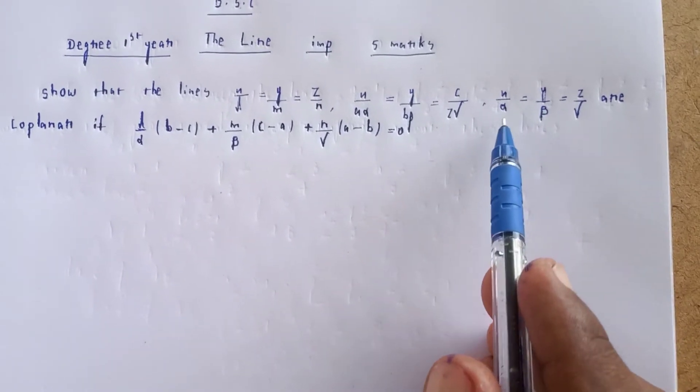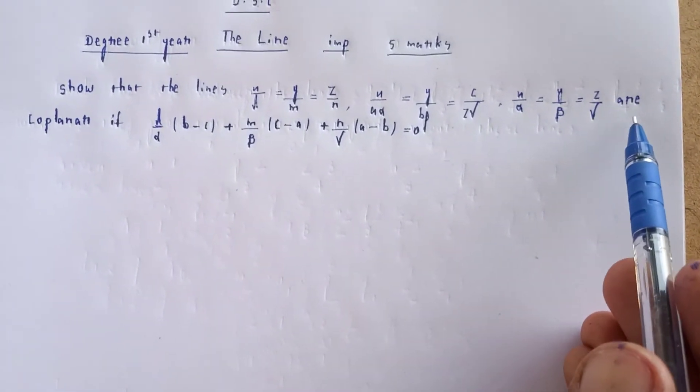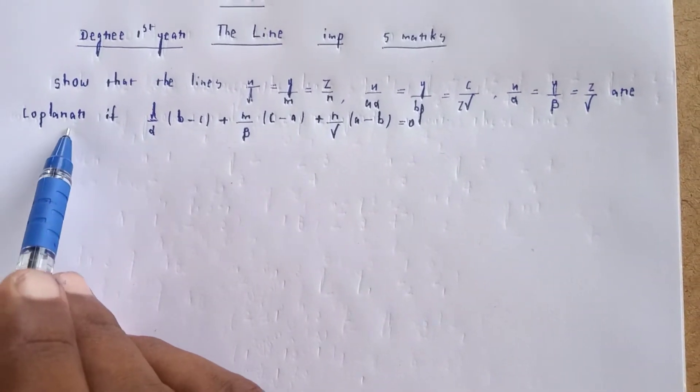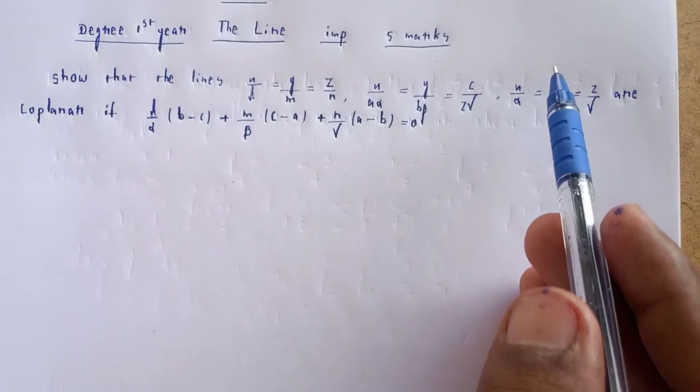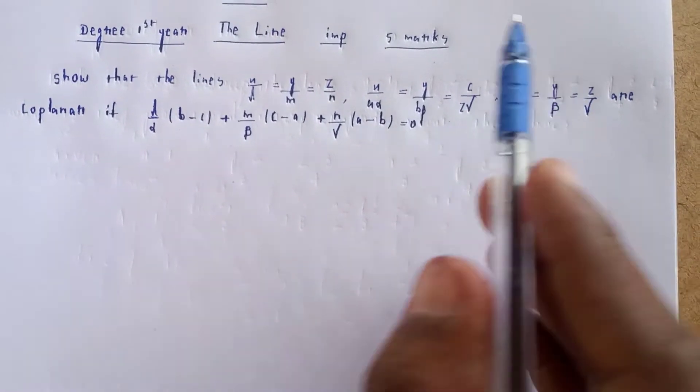The question is: when are the lines x/α = y/β = z/γ coplanar? We need to determine the reason and conditions for when these lines are coplanar.